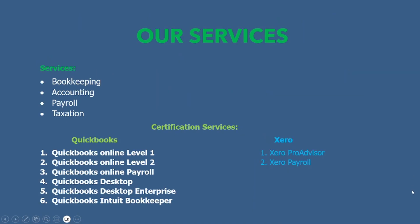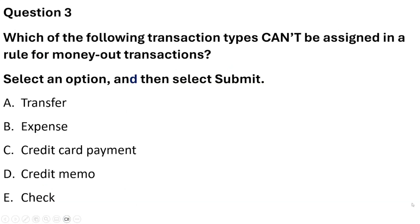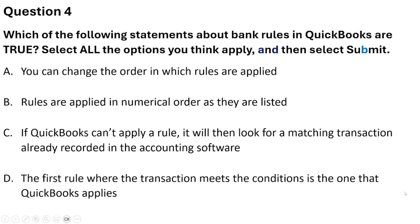Question 3: Which of the following transaction types cannot be assigned in a rule for money-out transactions? The options are transfer, expense, credit card payments, credit memo, and check. The correct answer is credit memo.